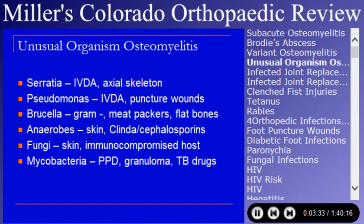There are some specialized infections that always get play on the test. Watch out for Serratia in IV drug abusers — it tends to be an axial skeleton lesion. Pseudomonas occurs in IV drug abusers and in puncture wounds through tennis shoes. Brucella is a gram-negative that occurs in meat packers and is classic for flat bones, especially the spine. Anaerobes occur from skin infections and from bites.